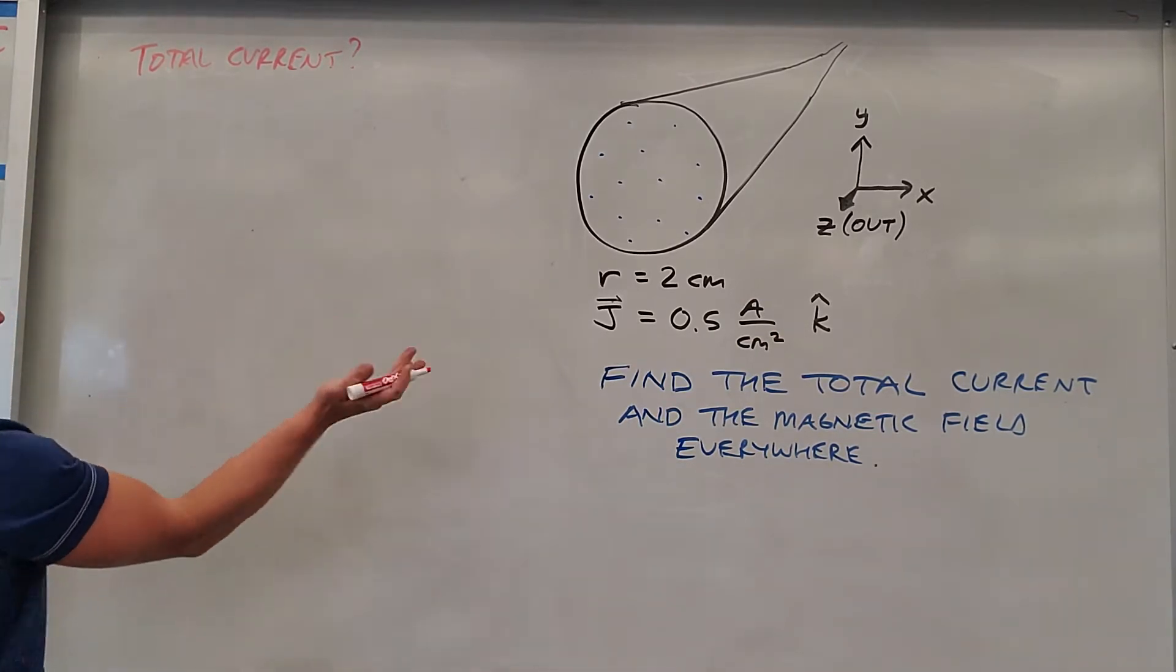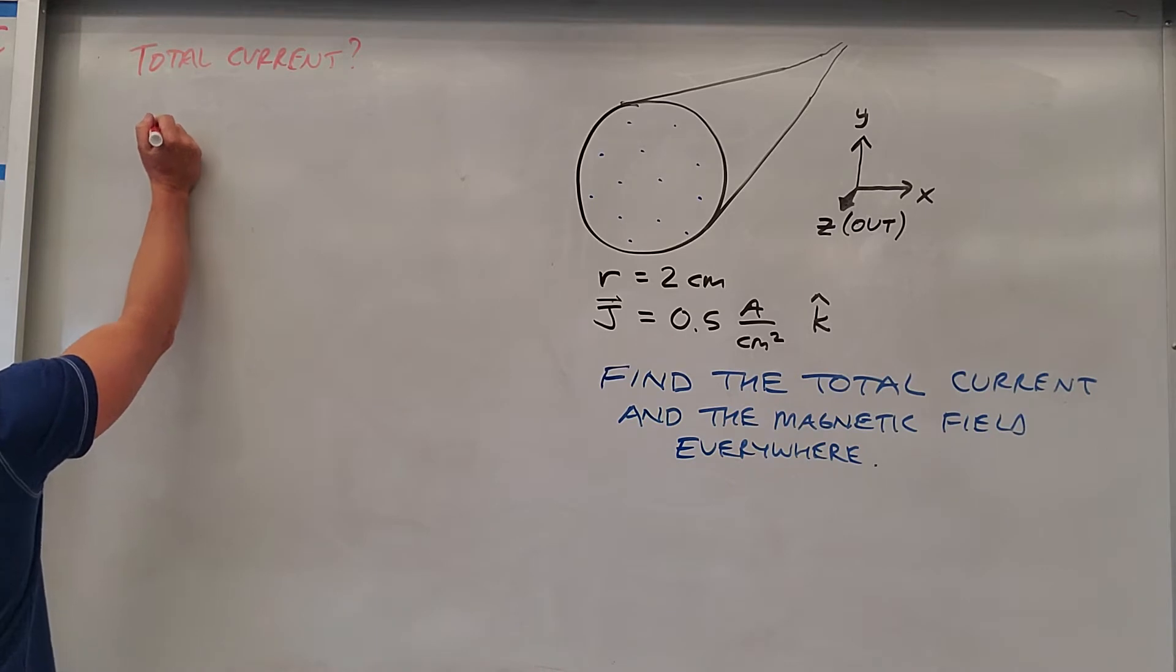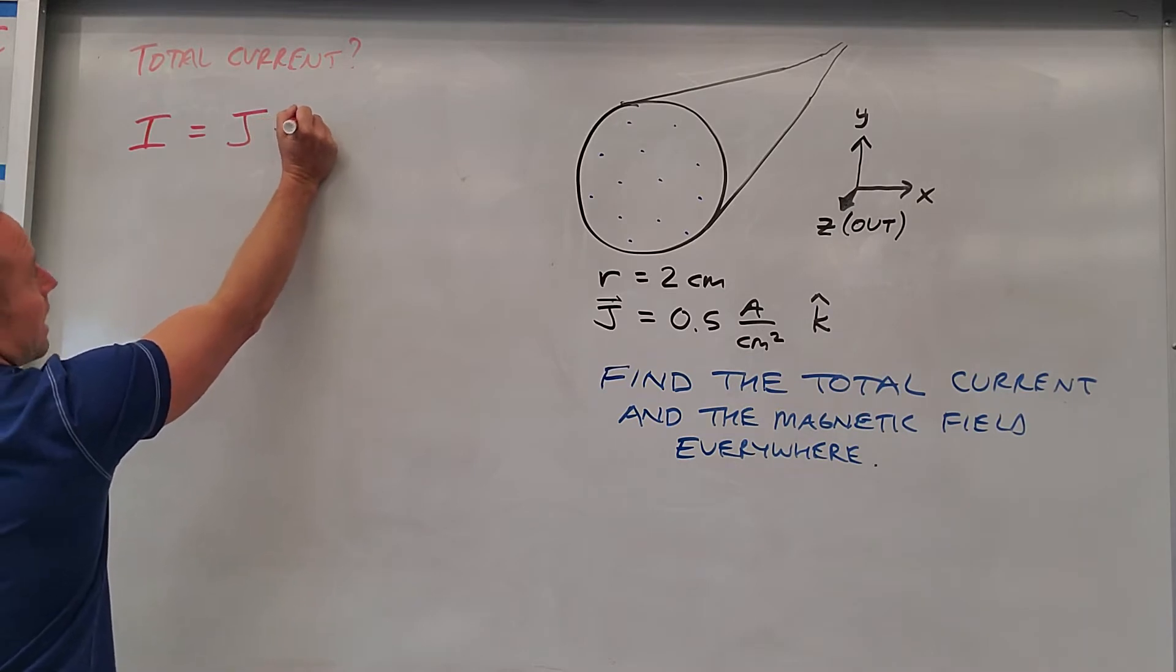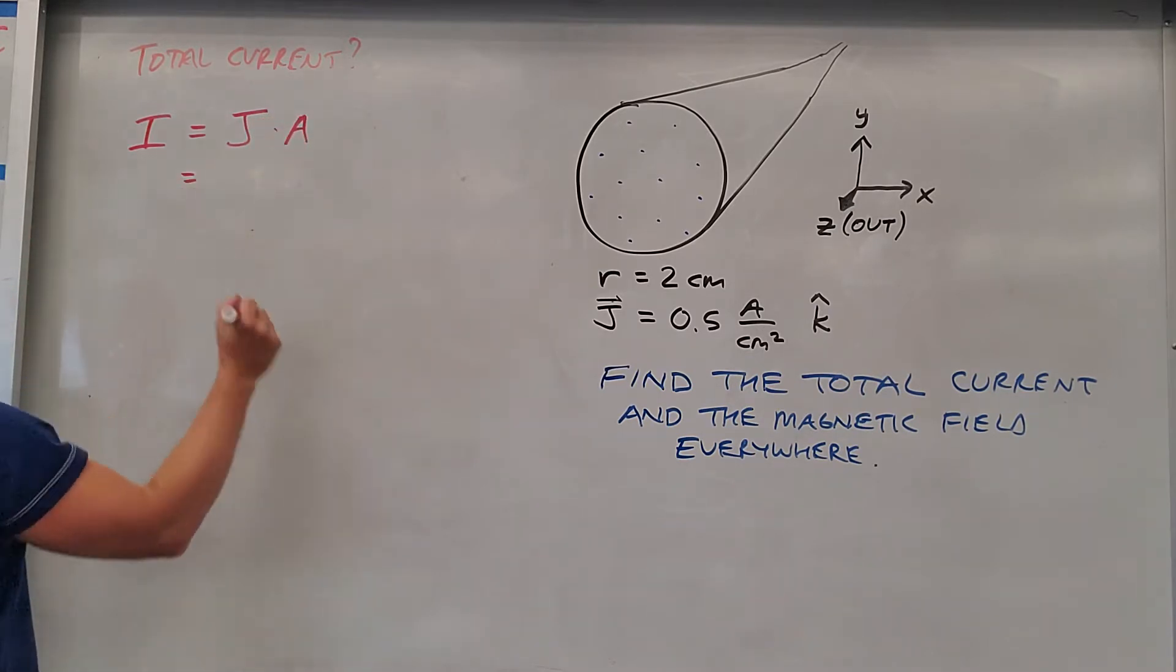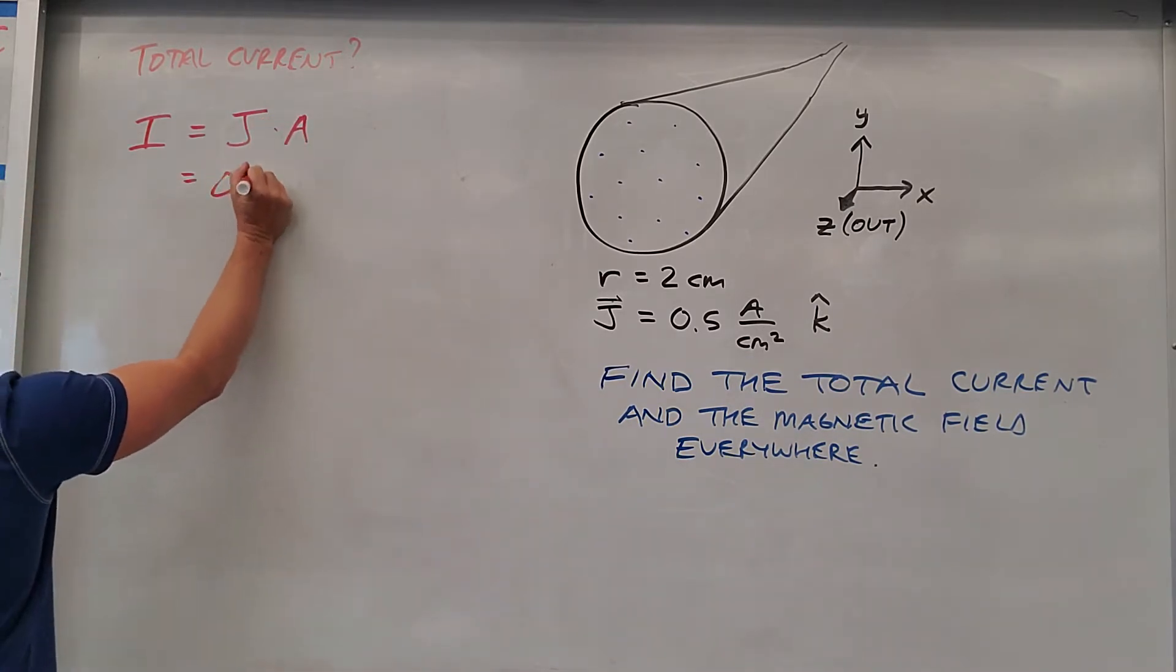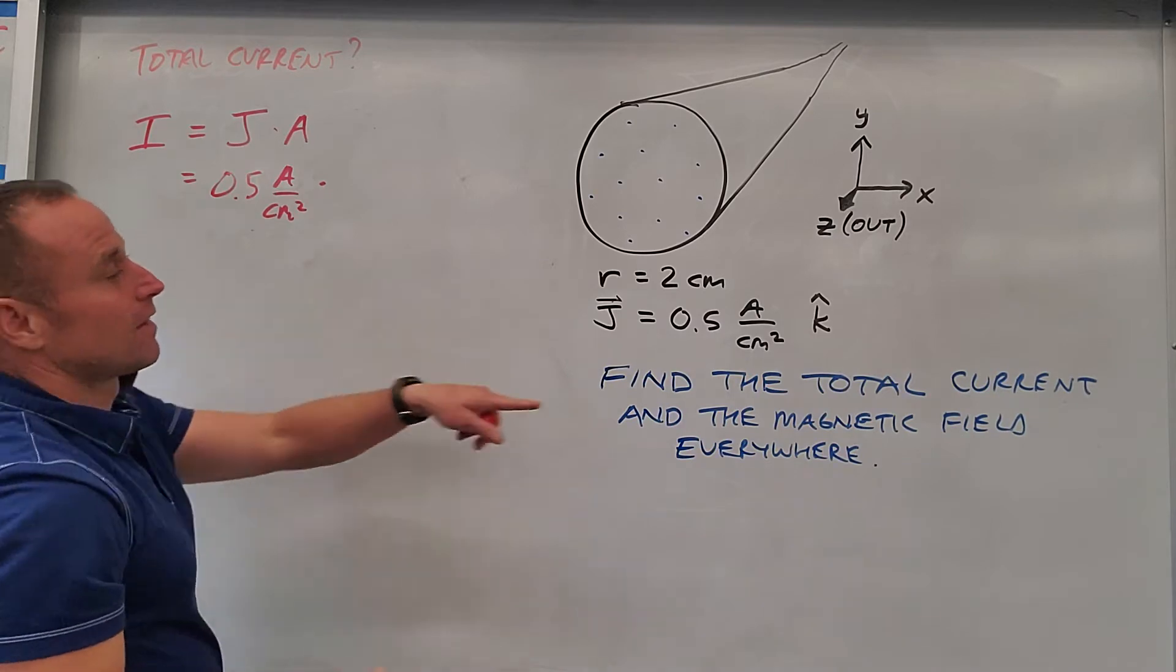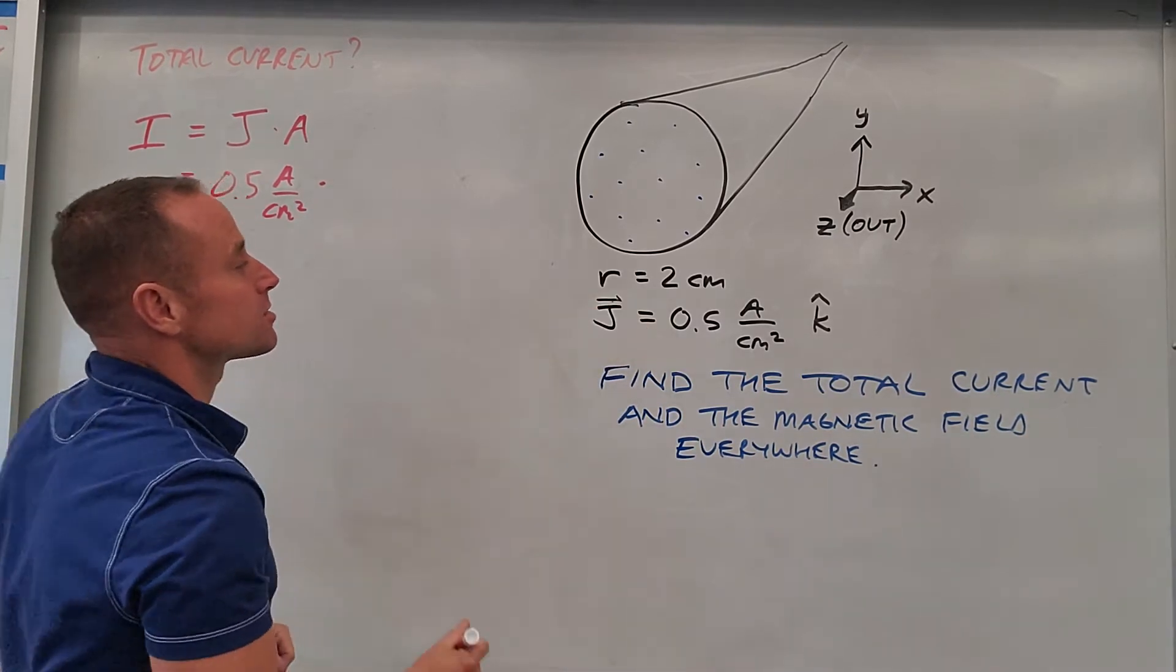You notice this is just current per area and it's uniform, so no need for anything too fancy here. We can just do current per area times area. So the current itself is just going to be current per area times the area. The current per area we have is 0.5 amps per centimeter squared